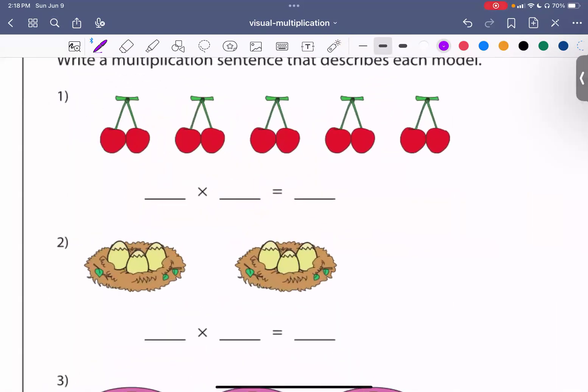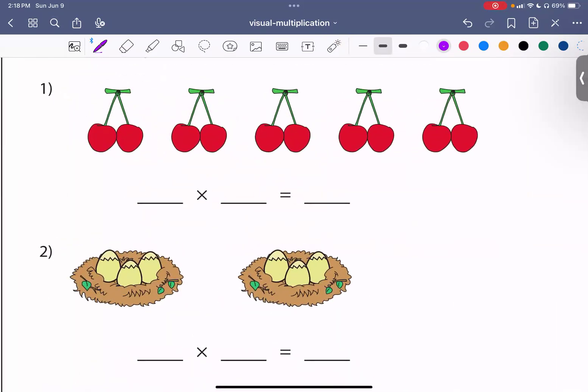Let's look at this next group. So we have five groups. One, two, three, four, five. And each group has one, two cherries. So two times five. So one, two, three, four, five groups gives us ten. If I counted it, one, two, three, four, five, six, seven, eight, nine, ten.